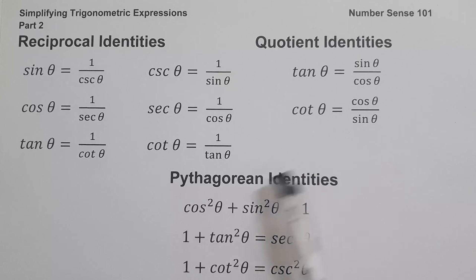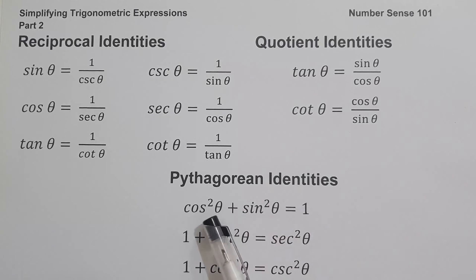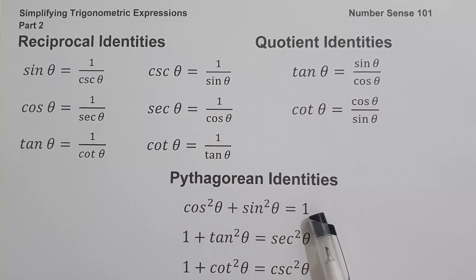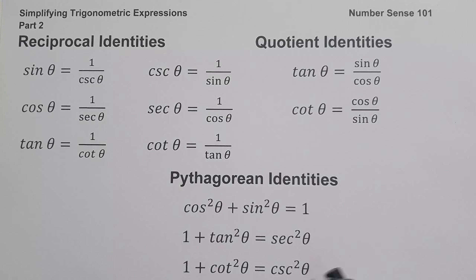And of course, we have the Pythagorean identities. Pythagorean identities consist of cos²θ + sin²θ = 1, 1 + tan²θ = sec²θ, and lastly, 1 + cot²θ = csc²θ. Those are the different identities you need to remember in order to simplify trigonometric expressions.